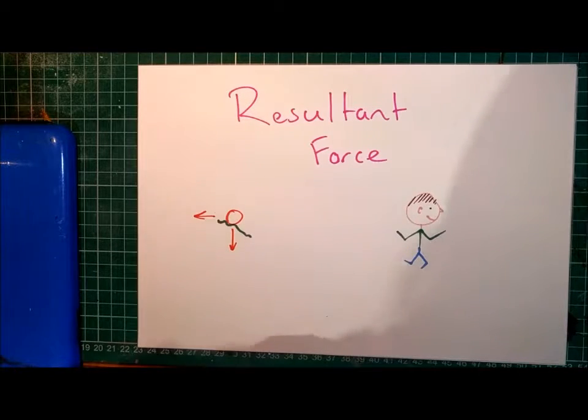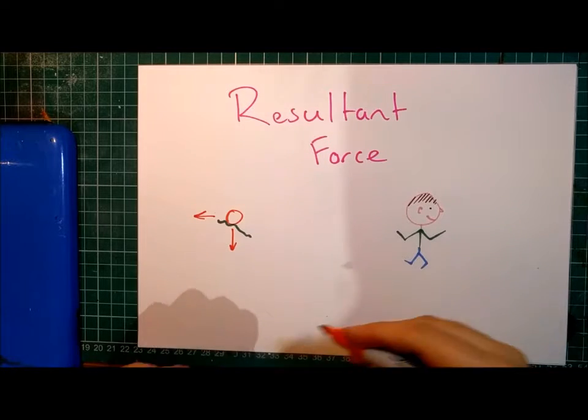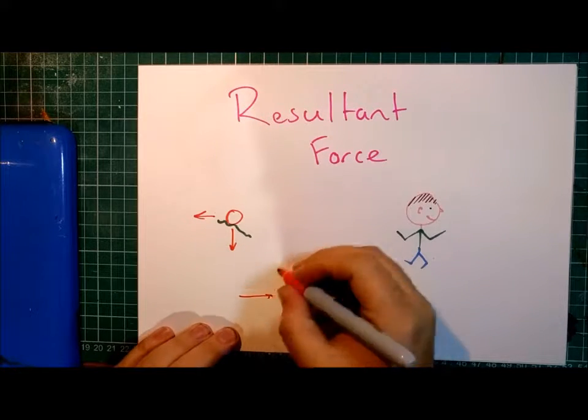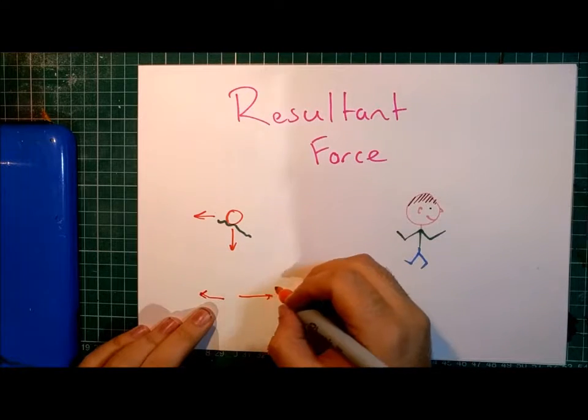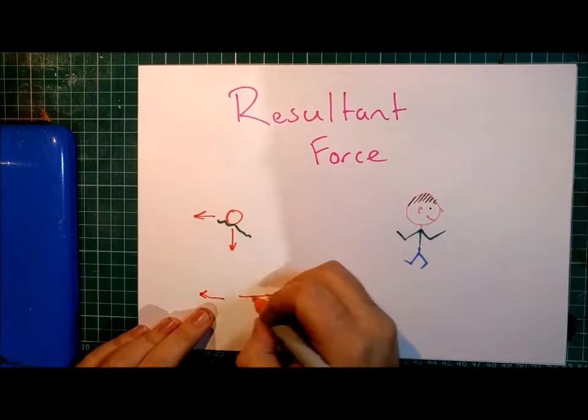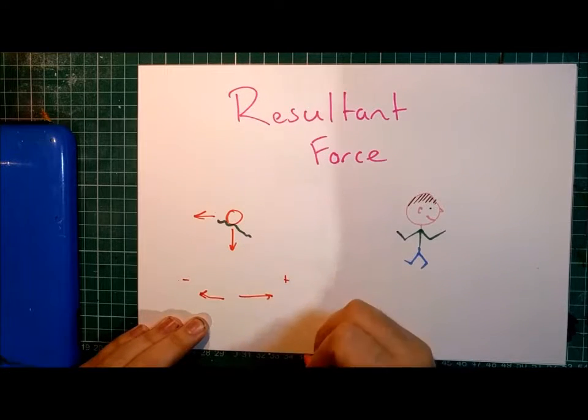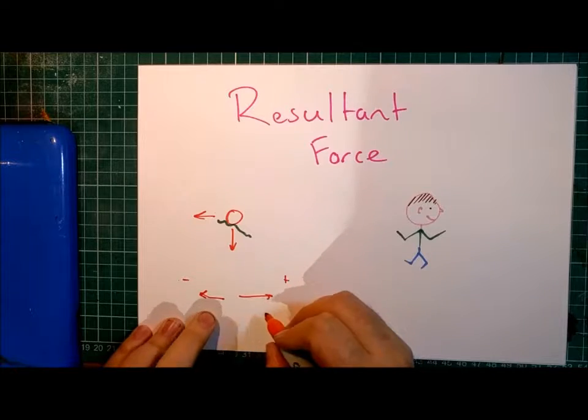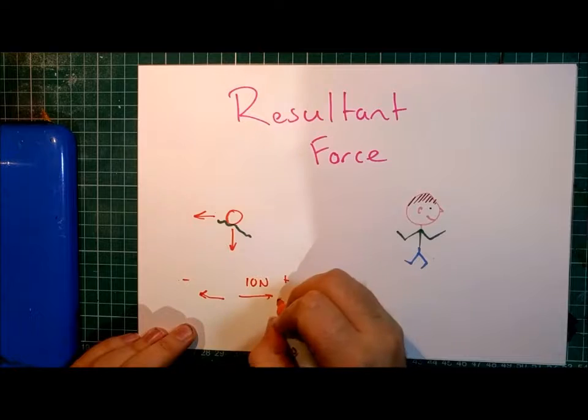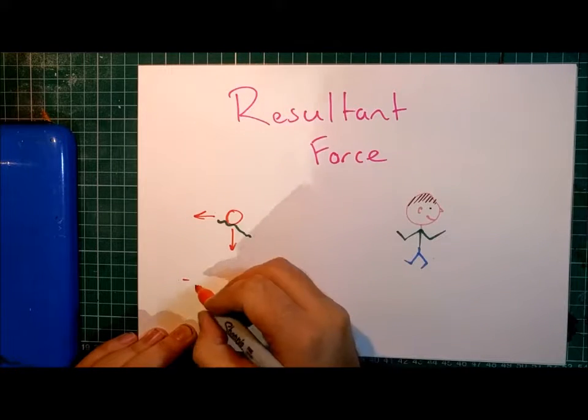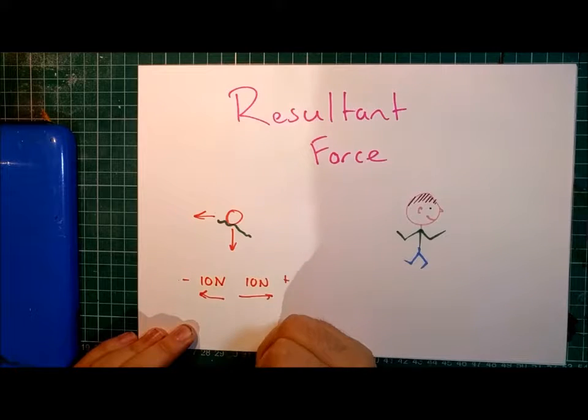Now, to determine the resultant force, it's important to remember that whenever two forces are acting in opposite directions, one of these two directions would be considered a negative direction and the other one a positive direction. So, even if they both had the same magnitude of force, say 10 newtons, in one way that would be a positive 10 newtons and in the other direction it would be minus 10 newtons.